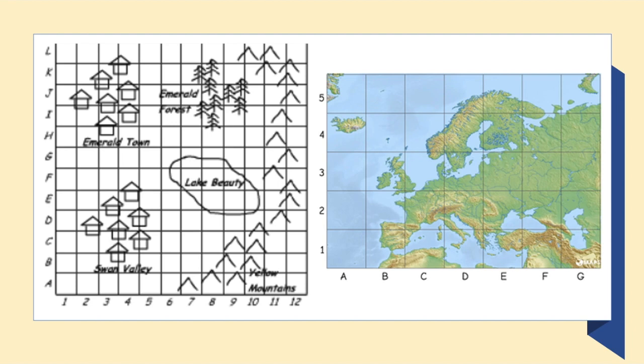Notice that both of these maps have one side that is letters and one side that is numbers. So when I give a coordinate, which is the spot I want you to look, it's going to consist of both a letter and a number.